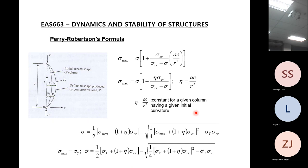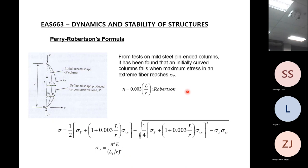The constant eta here: from many many tests and research, eta can be approximately calculated using the Robertson formula: eta equals 0.003 times L over r, where L is the height of the column and r is the radius of gyration. If we know L and r, we can get eta from this Robertson constant and substitute it in to get the full design equation, allowing us to estimate the allowable load on the column.